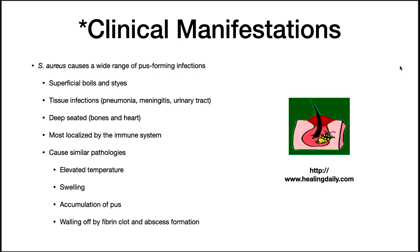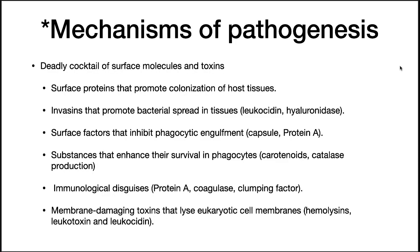In all cases, these infections cause similar pathologies: an elevated temperature, swelling, and accumulation of pus. The immune system will respond by attempting to wall off the infection in a fibrin clot. Abscesses are a common formation.